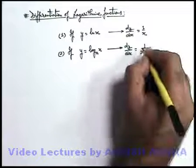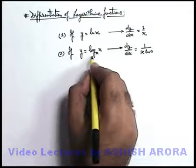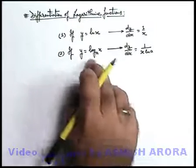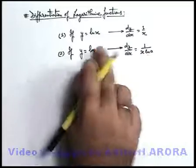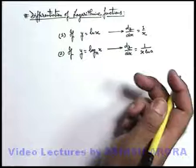This you can also execute by changing the base. It can be written as ln x upon ln a. So 1 upon ln a will be kept as it is, ln x will be differentiated as 1 by x. Just keep these two relations in mind.